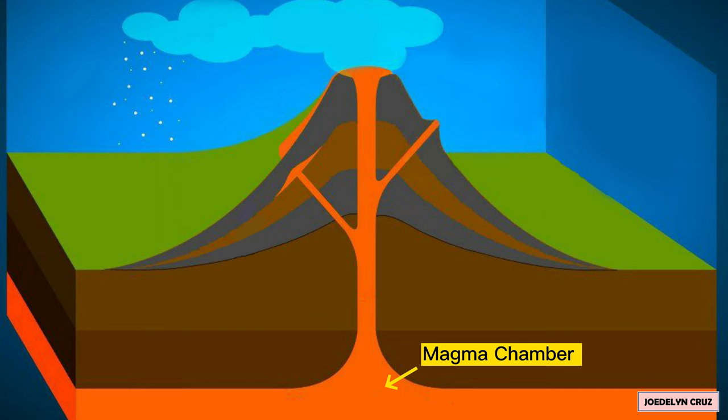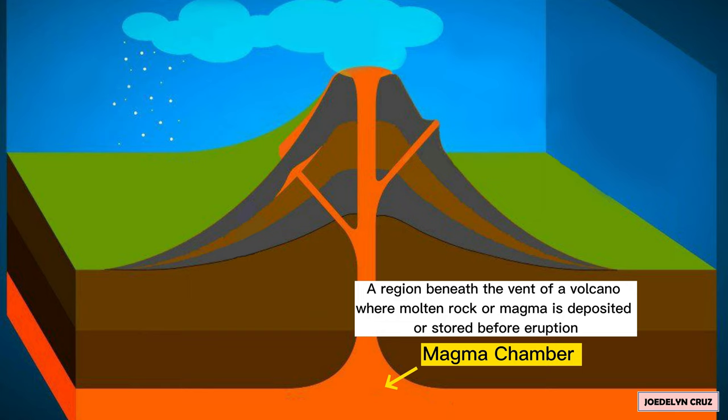Magma Chamber. Magma chamber is a region beneath the vent of a volcano where molten rock or magma is deposited or stored before eruption.